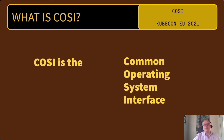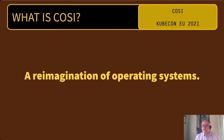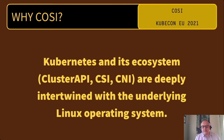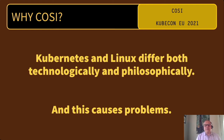It also gave us a chance to reimagine operating systems — what do we do in operating systems in a Kubernetes world? Cozy has given us the chance to rethink exactly what it means to be an operating system in the age of containers and distributed schedulers. Kubernetes and its ecosystem, from cluster API to things like the storage and networking interfaces, are deeply intertwined with the underlying Linux operating system. We find that Kubernetes and Linux don't only differ technologically, but there's also a difference in philosophy in the way the systems are composed — the philosophy of Unix — and this causes problems at the boundary where Kubernetes and Linux interact.